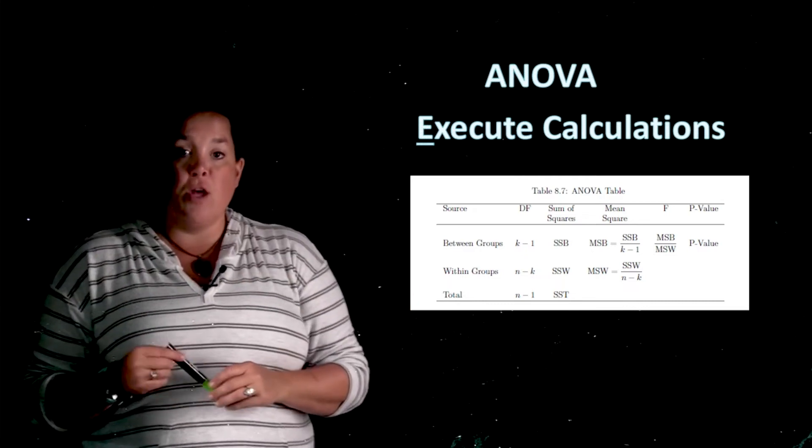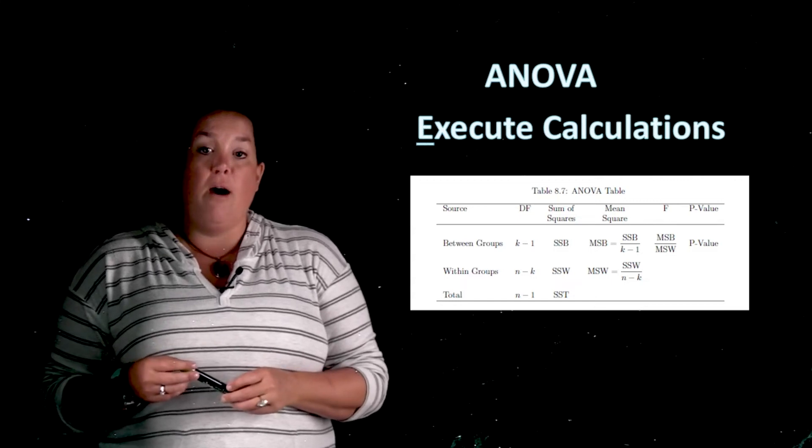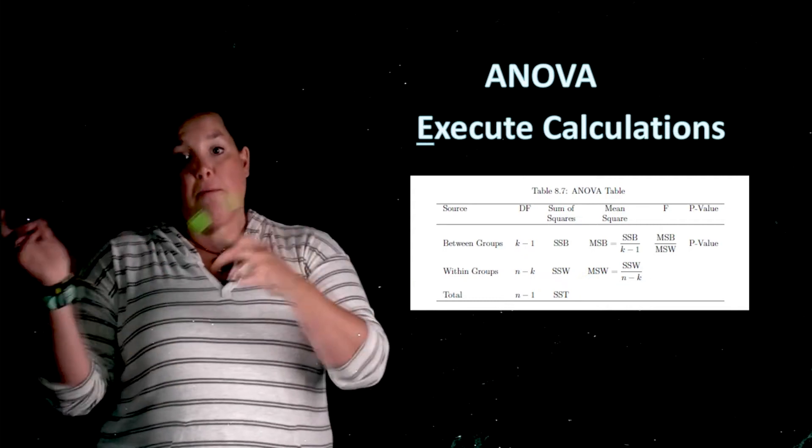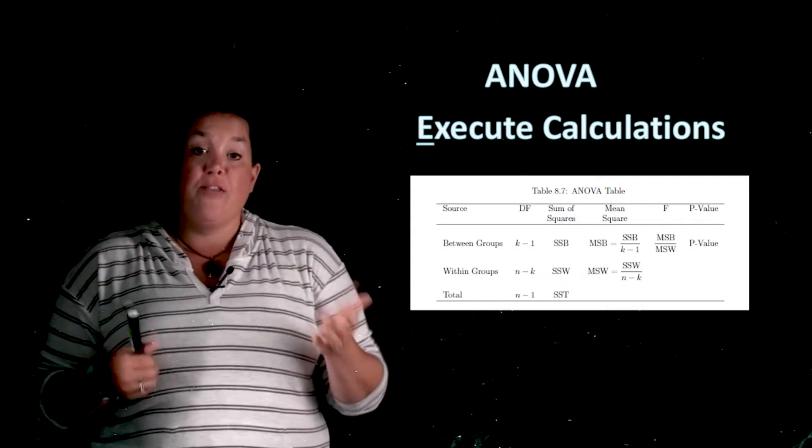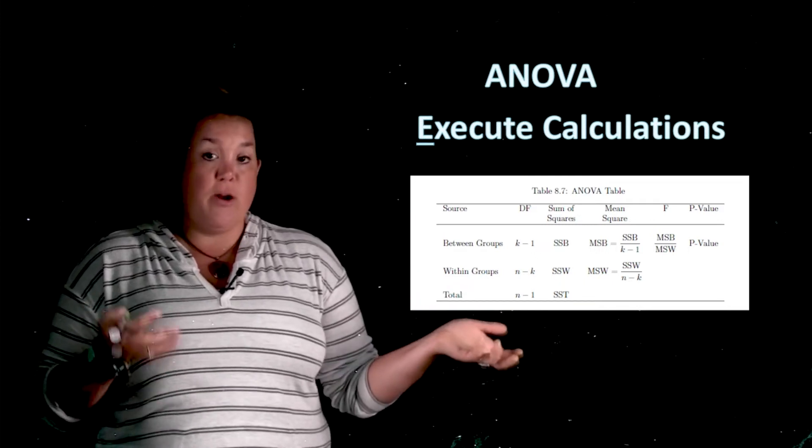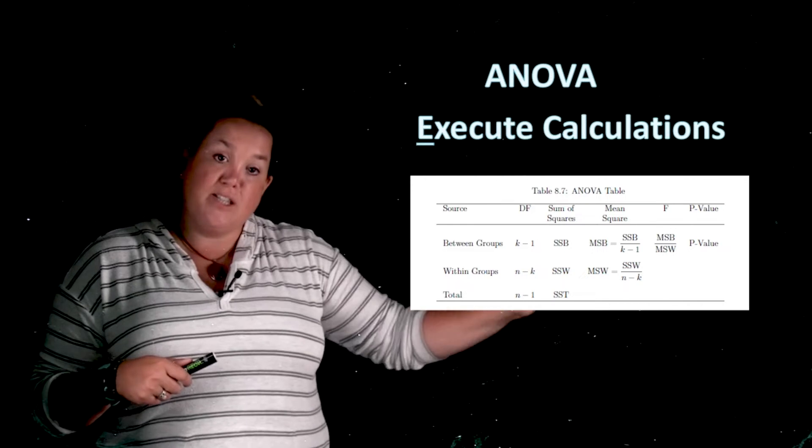The other thing that you will notice because of the way that this calculation works, the F test statistic actually can never be negative. And so just like we saw back when we did the chi-squared, this has a right skewed distribution. And with the chi-squared as well as this F distribution, it has that right skew.